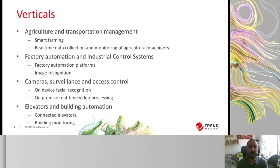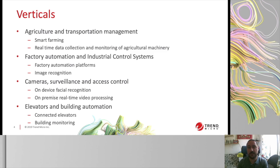That's why edge computing has been used across multiple verticals with success — such as agriculture and transportation systems for smart farming, where you need real-time data collection and monitoring of machinery in a remote field; factory automation and industrial control systems where response time is critical, such as smart manufacturing cameras that identify and discard defective pieces on a production line; cameras and surveillance, where you have sensitive information like people's faces; and elevators and building automation.